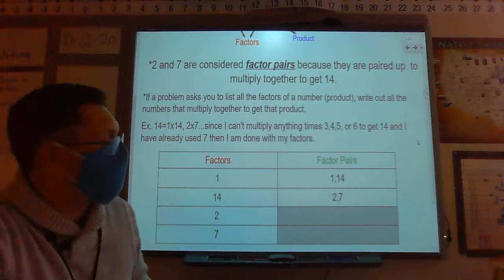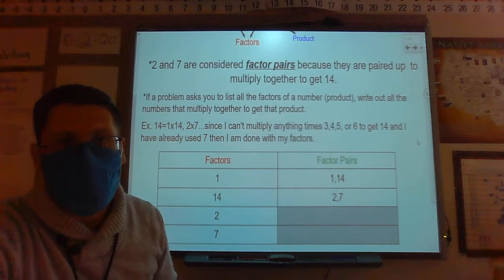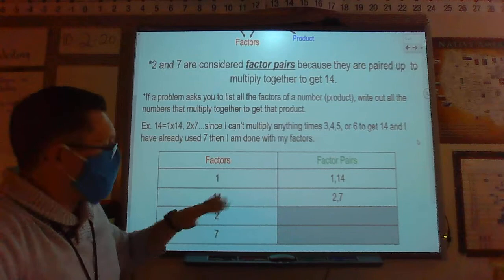If I have 14, I'm going to do 1 times 14 and 2 times 7. Since I can't multiply anything times 3, 4, 5, or 6 to equal 14, and I've already used 7, then I'm done with all my factors.